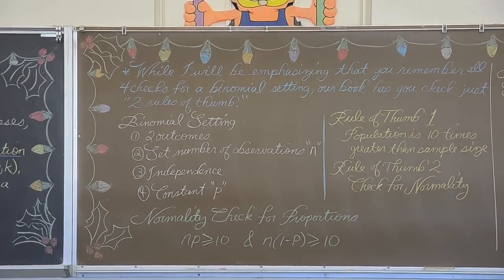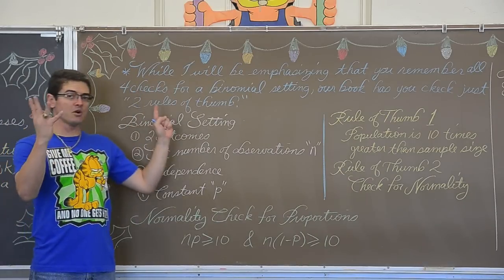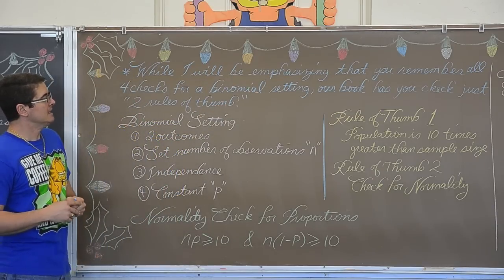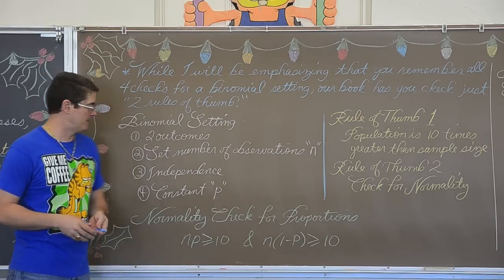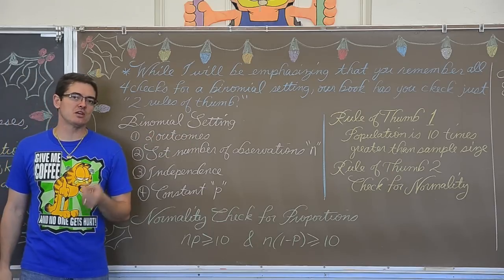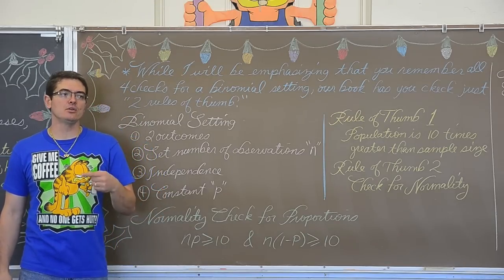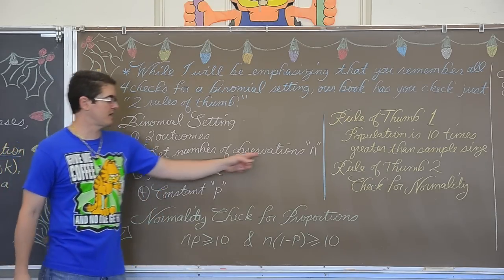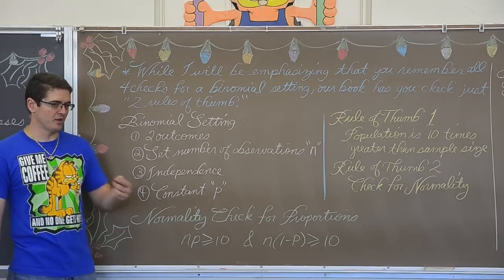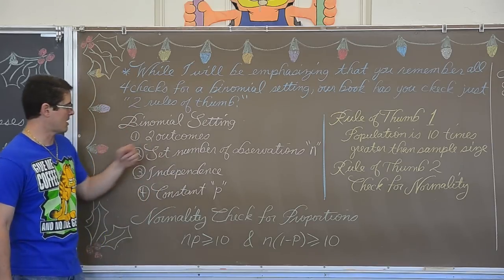Wow! I will be emphasizing that you remember all four checks of a binomial setting. This particular textbook I am using, in the current edition, only really marks off two rules of thumb. The full binomial setting is that there are two outcomes per observation or trial. There is a set number of observations. Remember geometric is when you went until you obtained your first success, but in a binomial setting, which is much more common in our class dealing with it, there is a set number of observations of n. I am going to ask 300 people this question. I am going to run this experiment, this pass fail experiment 50 times. Set number of observations.